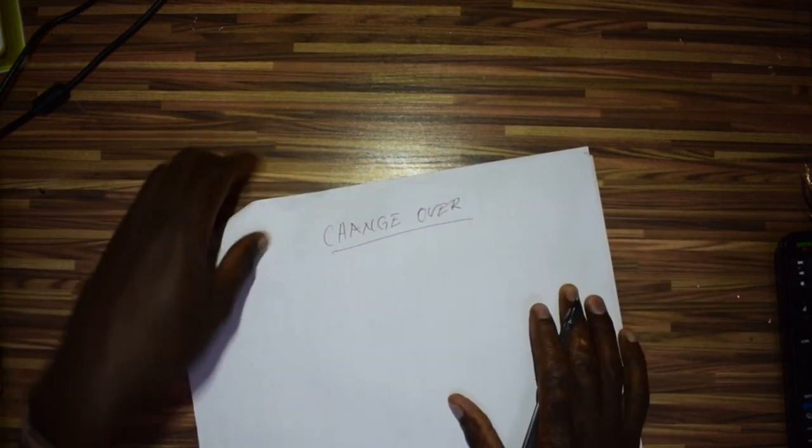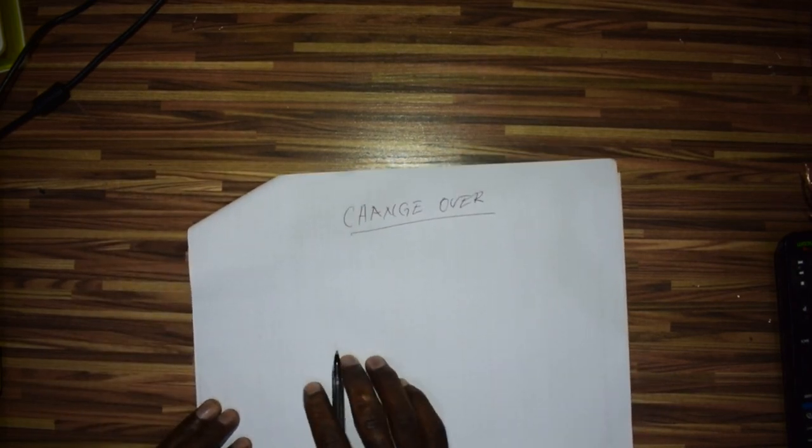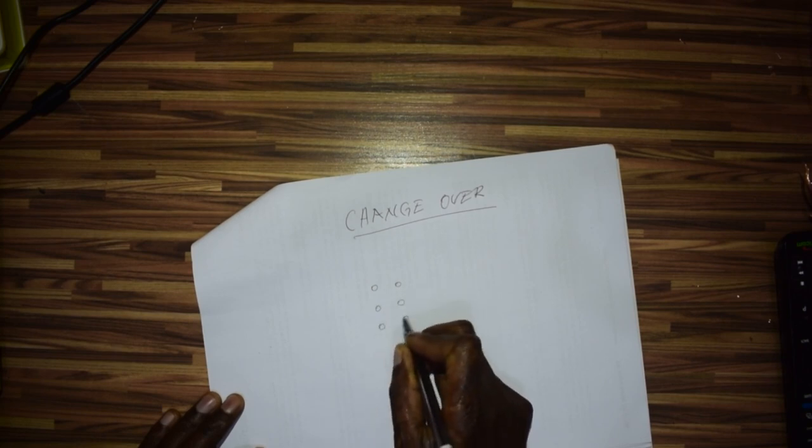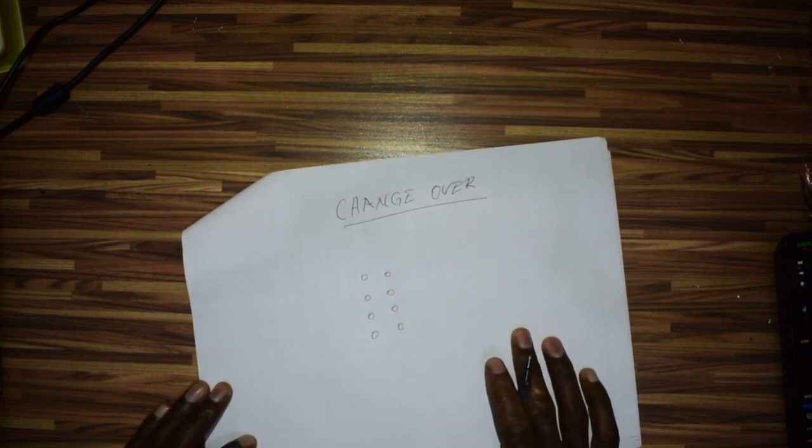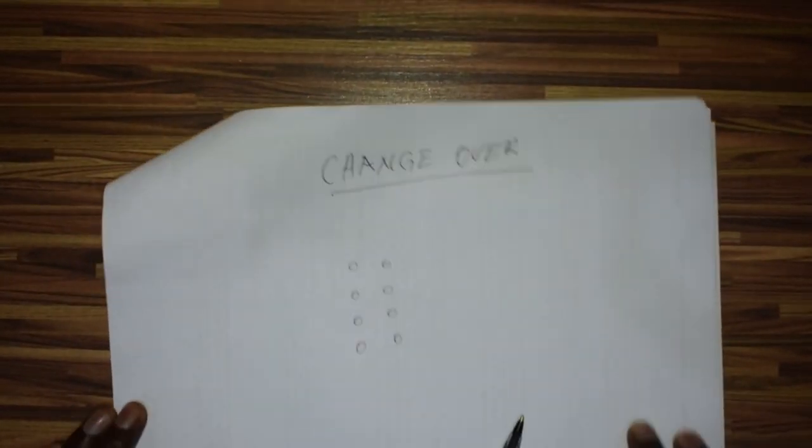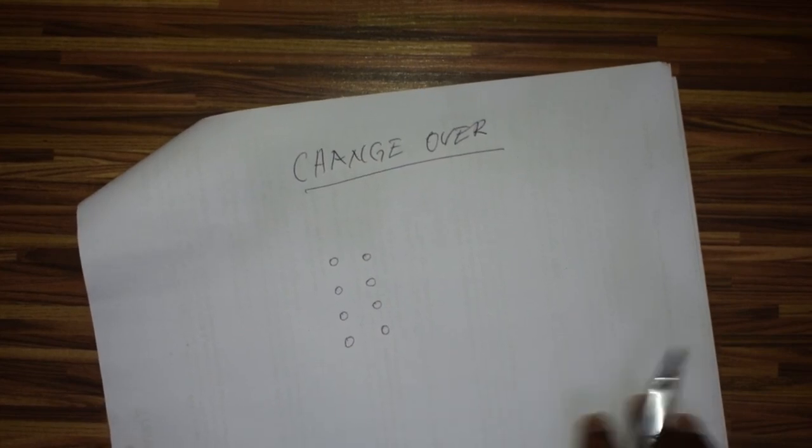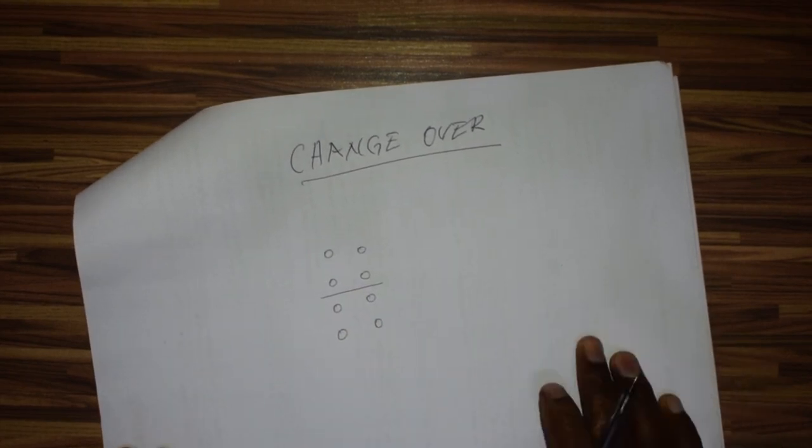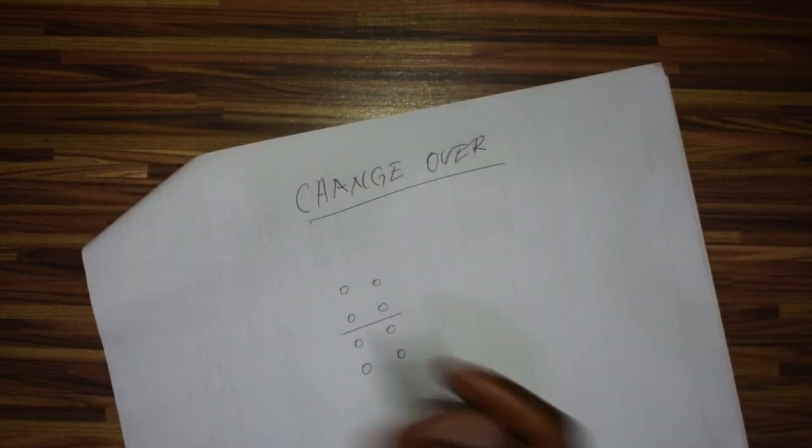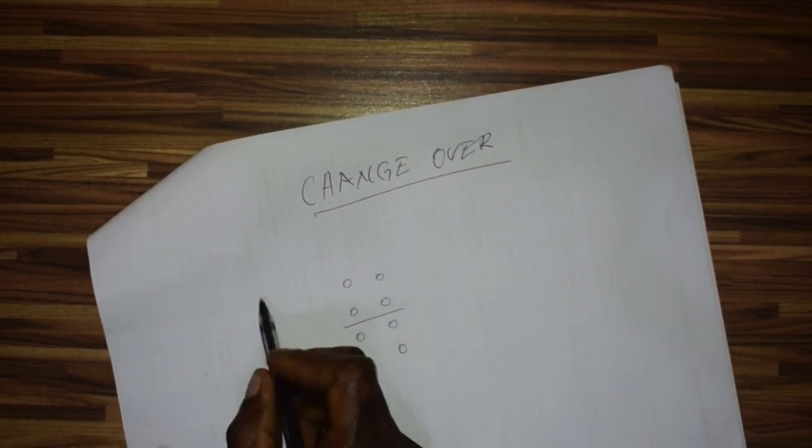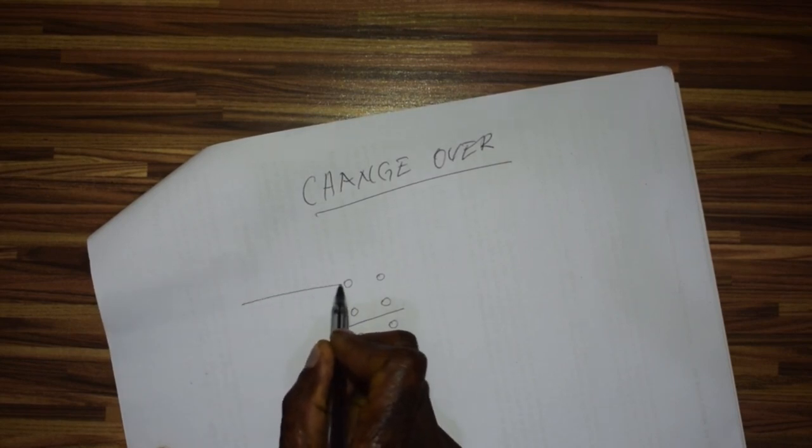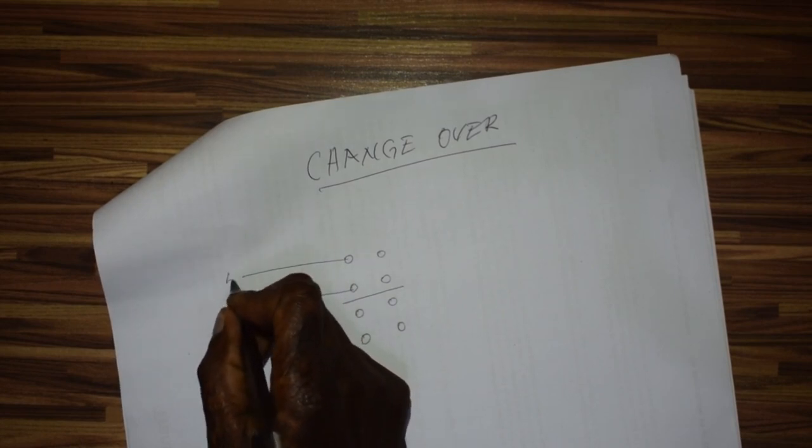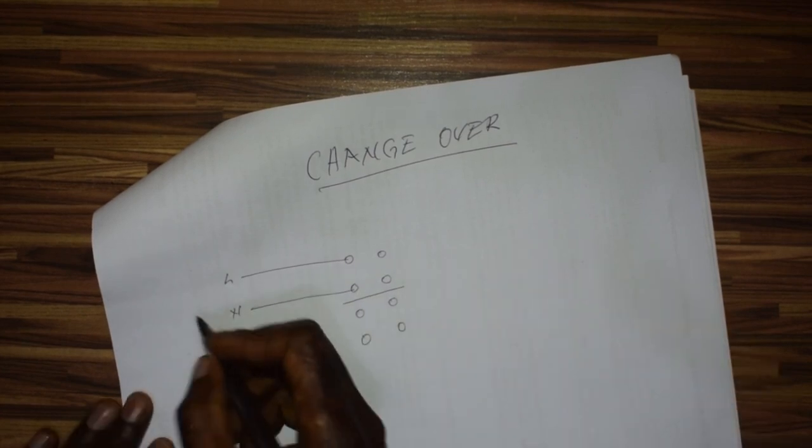Let's assume we take single phase. I'll draw only two lines. This is now our changeover, the one I showed you. Let's have our powers. The upper one we'll take as the main power, L for live and N for neutral. This will be our main.